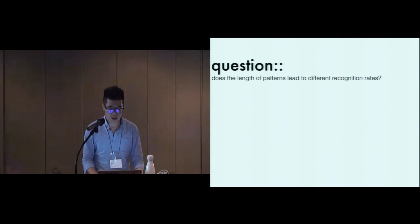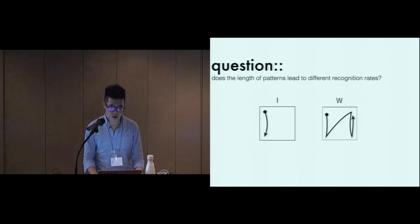However, rendering EdgeWrite has one potential problem. Different lengths of patterns might lead to different cognitive load. Thus, not all the patterns are easy to recognize. For example, recognizing letter I might be much easier than recognizing letter W, since W contains more vibration, and also W takes longer time to be rendered.